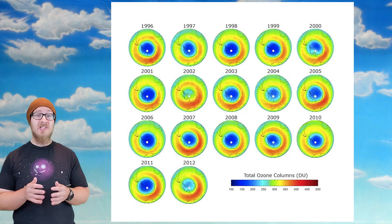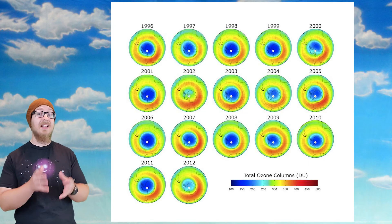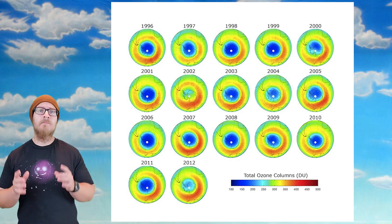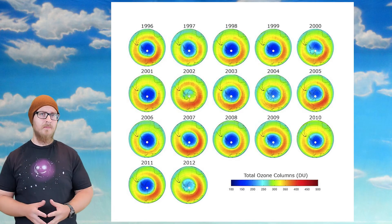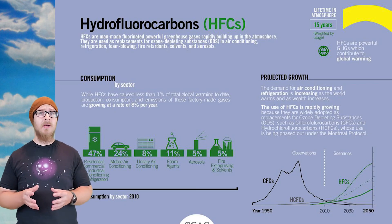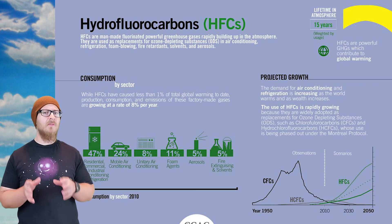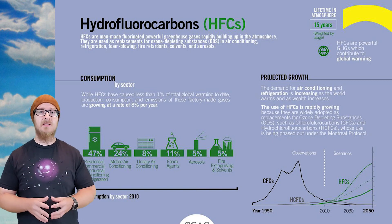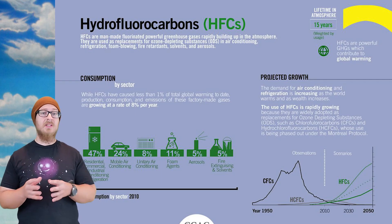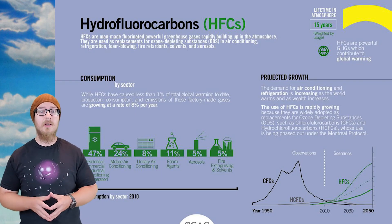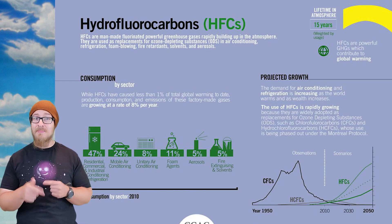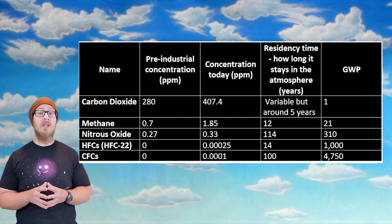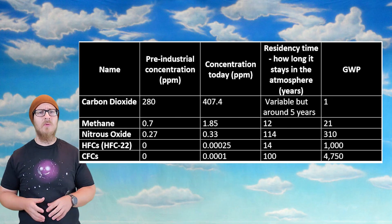Since then, the ozone layer has been slowly recovering, and in 2019 it was reported that the hole is the smallest it's ever been on record, but it still has not fully recovered. After the ban of CFCs, they were replaced with another group of chemicals called HFCs — hydrofluorocarbons — which contain hydrogen instead of chlorine. Though HFCs do not deplete ozone, they are also a powerful greenhouse gas with a GWP of around 1,000, depending on the exact chemical formula.